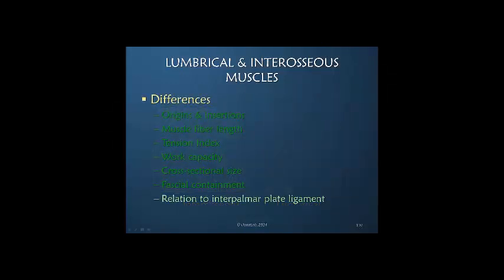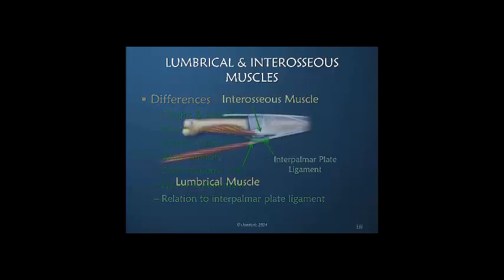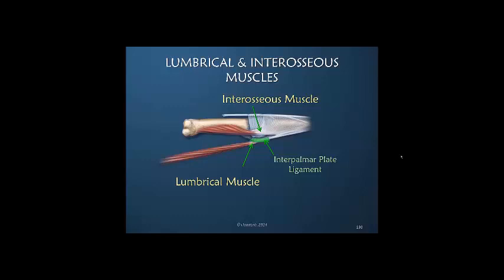What about the relation to the interpalmar plate ligament? The interosseous muscle is always dorsal to the interpalmar plate ligament, and the lumbrical muscle is always volar to it. This is a relatively consistent anatomy compared to other anatomical features of the dorsal apparatus and the intrinsic muscles.